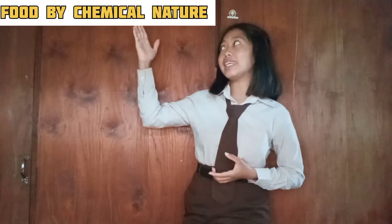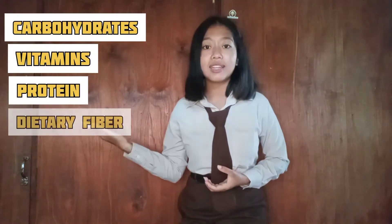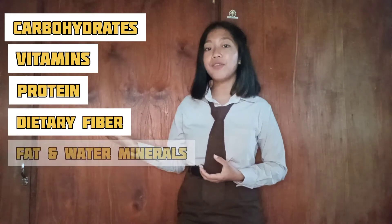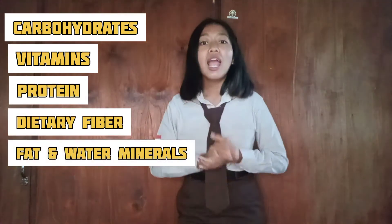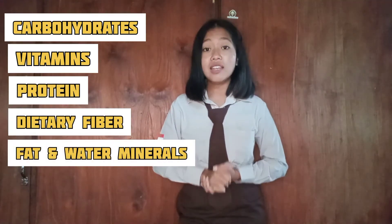Let me explain the classifications one by one. First, starting from food by chemical nature. Based on the chemical nature, carbohydrates, vitamins, proteins, dietary fiber, fats, water, and minerals — these are the contents included in food.